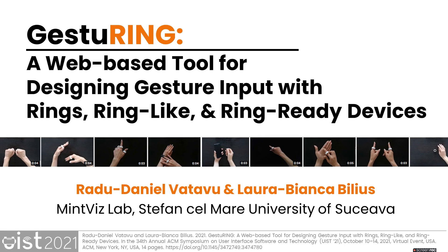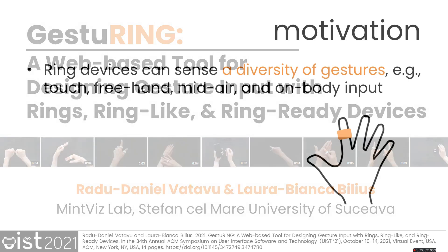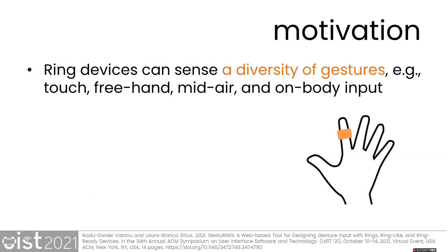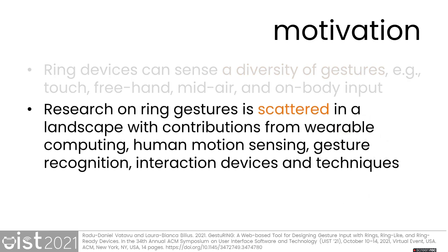We introduce in this paper Gesturing, a gesture dataset and tool for the web meant to support design of ring-based gesture input. We focus on ring devices because rings can detect a variety of gesture types, such as taps on the ring's surface, hand poses and mid-air gestures, but also body-referenced and on-body input.